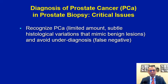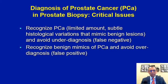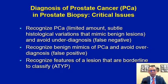When we evaluate prostate needle biopsies, we face three critical issues: recognizing cancer and avoiding underdiagnosis, particularly when it is limited in amount; recognizing various benign mimics of cancer and avoiding overdiagnosis; and the third critical issue is to recognize features of a lesion which are borderline to classify either as cancer or as benign. That is the situation we refer to as atypical glands or ASAP, and that certainly can be a pretty problematic area in prostate biopsy interpretations.